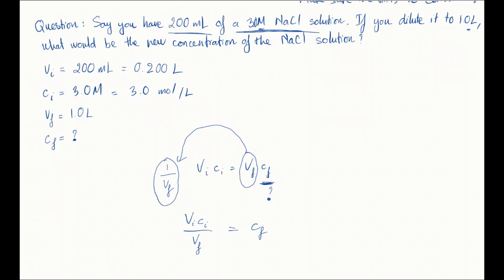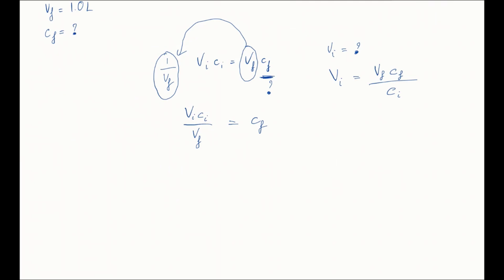What if you want to find Vi, for example, while already knowing Ci, Cf, and Vf? You simply just keep Vi there and bring Ci to the other side and divide that term by Ci. Okay, let's get back to the question.